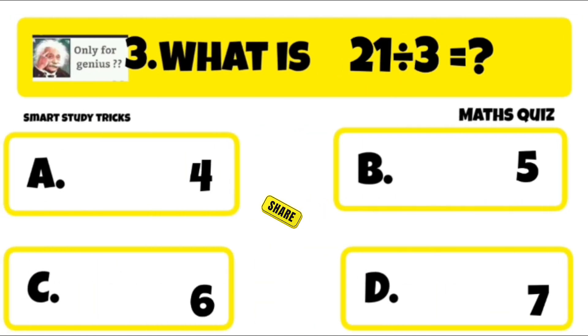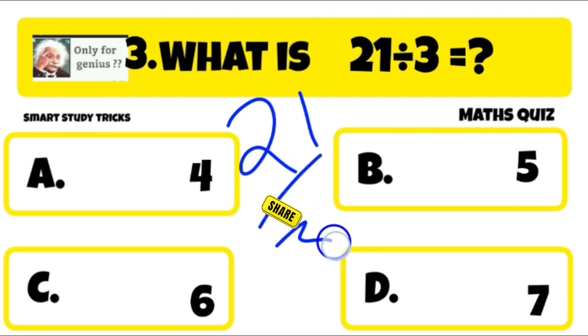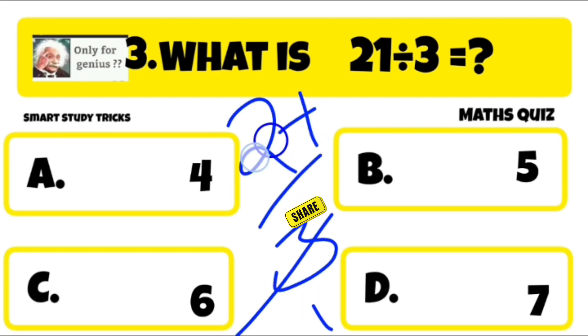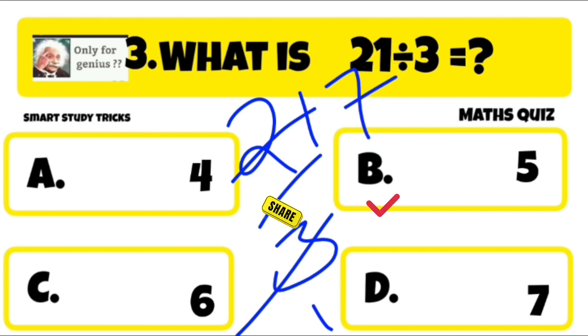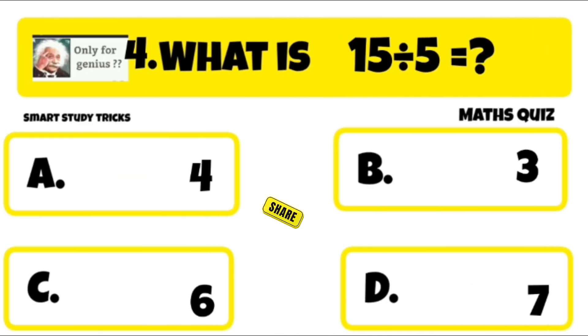Quiz number 3 is: what is 21 divided by 3? 21 divided by 3 is equal to 7. Right answer is D: 7.